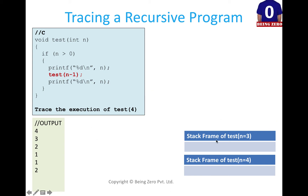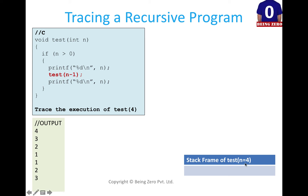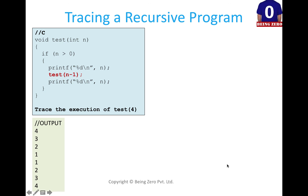We go back to where n was 3 — it had printed 3, made a recursive call to 2 which has now returned — so it prints 3 again and that stack unwinds. Finally, we come back to n=4: we had printed 4 and made a recursive call to 3, which has returned, so we print 4 again and that stack frame is also unwound. The final output of this program is 4 3 2 1 1 2 3 4.